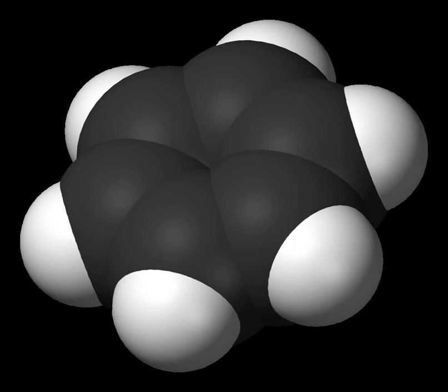Michael Faraday first isolated and identified benzene in 1825 from the oily residue derived from the production of illuminating gas, giving it the name bicarburet of hydrogen. In 1833, Eilhard Mitscherlich produced it by distilling benzoic acid from gum benzoin and lime. He gave the compound the name benzene.